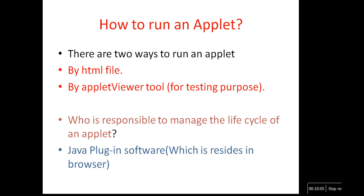Now, how do we run an applet? There are two ways to run an applet: by HTML file or by Applet Viewer. Applet Viewer is for testing purposes, and HTML file is for browsing. The Java plugin software which resides inside the browser is responsible for managing the life cycle of an applet. One way is using an HTML file and the other is using the Applet Viewer tool.